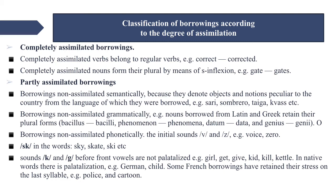Partly assimilated borrowings are subdivided into the following groups: borrowings non-assimilated semantically, borrowings non-assimilated grammatically, and borrowings non-assimilated phonetically. Non-assimilated semantically are words that denote objects and notions peculiar to the country from whose language they were borrowed — for example, 'safari', 'sombrero', 'taiga', and 'kvas'.